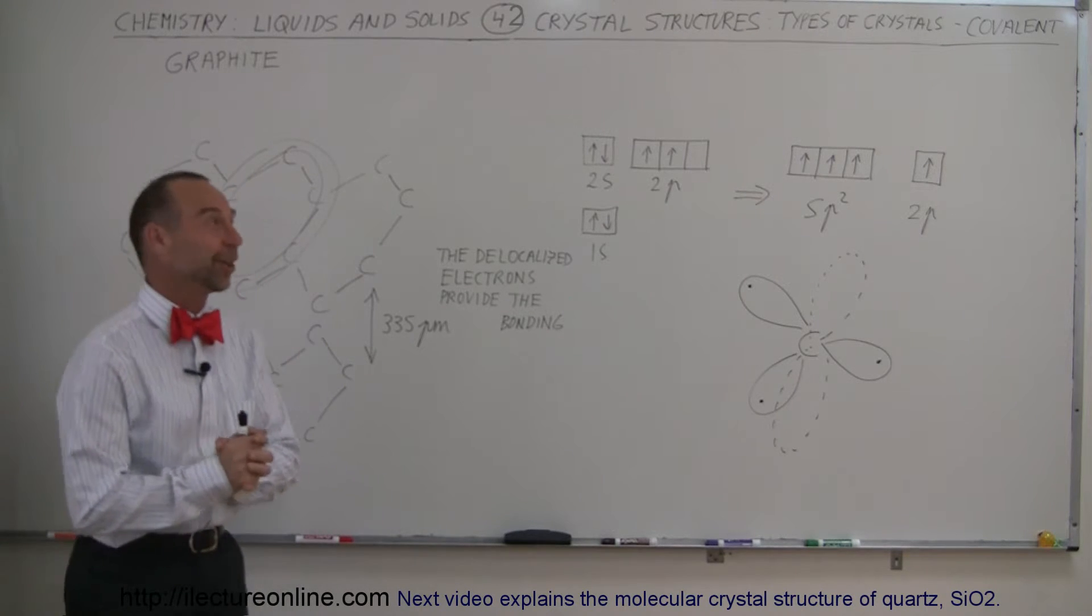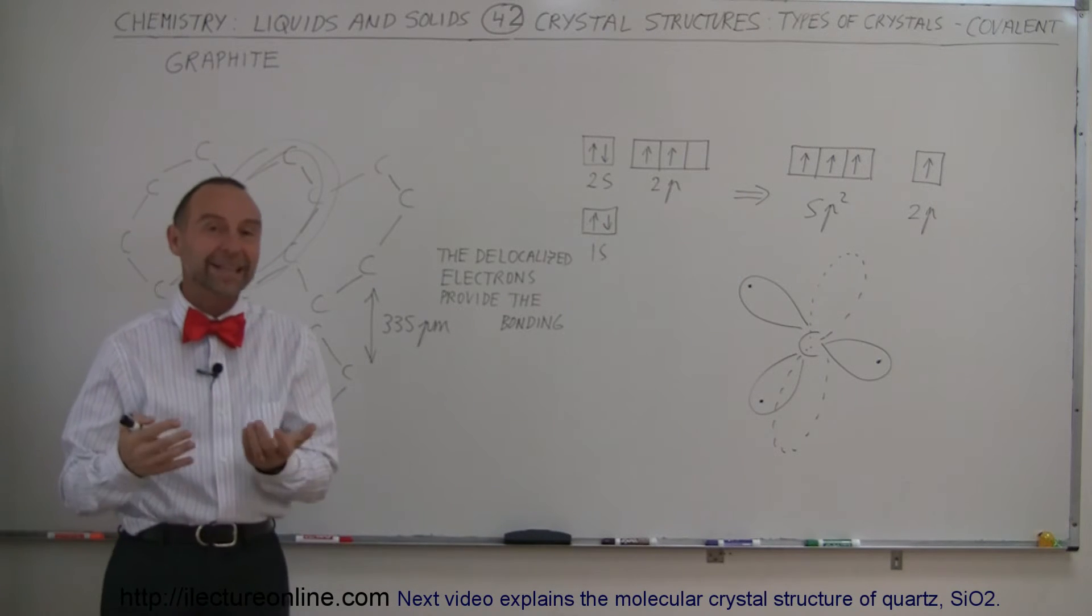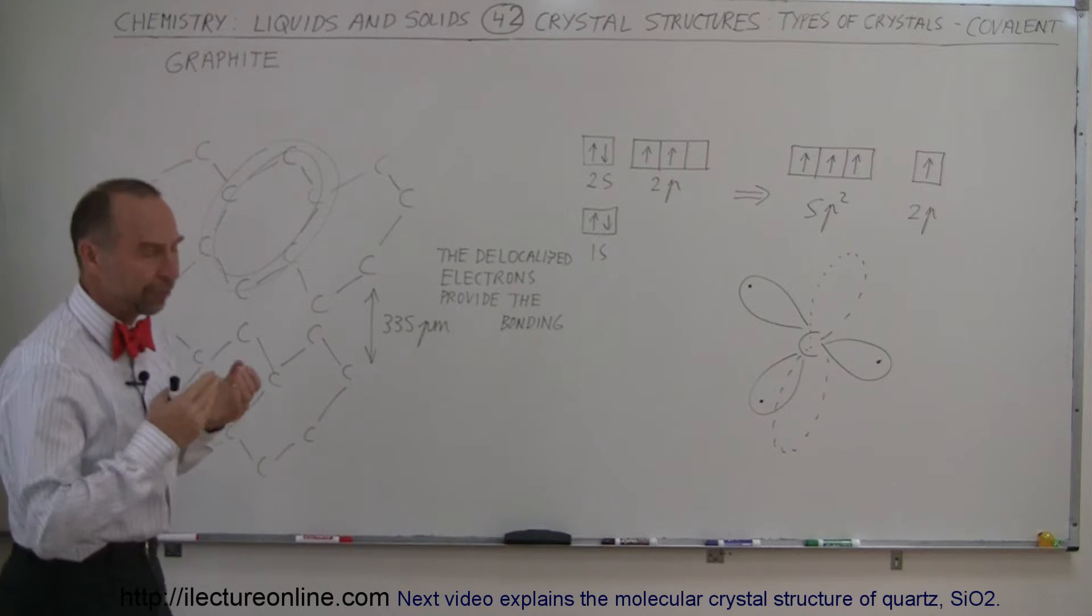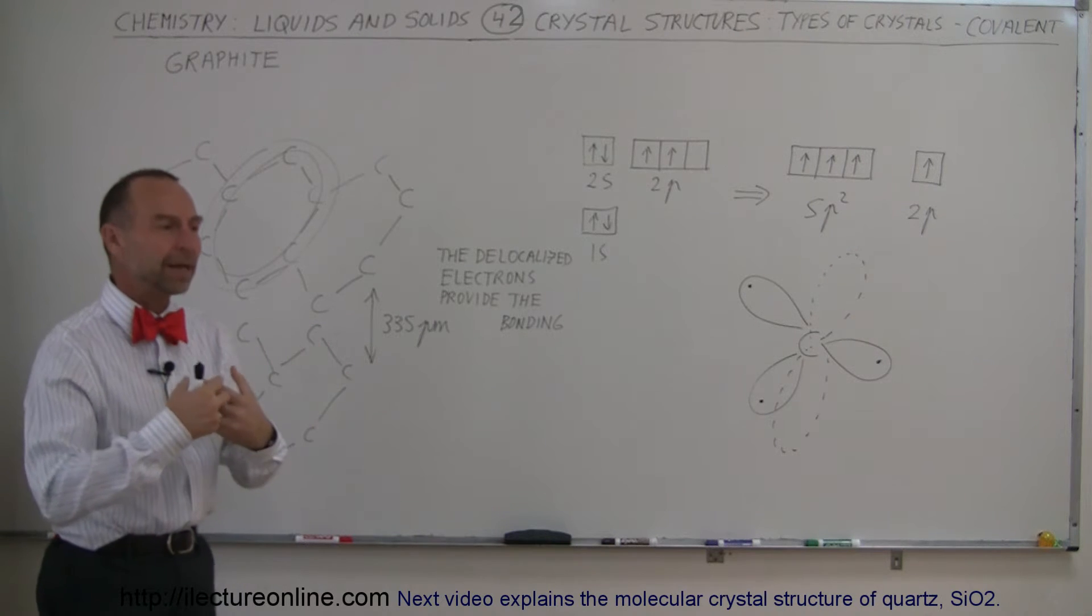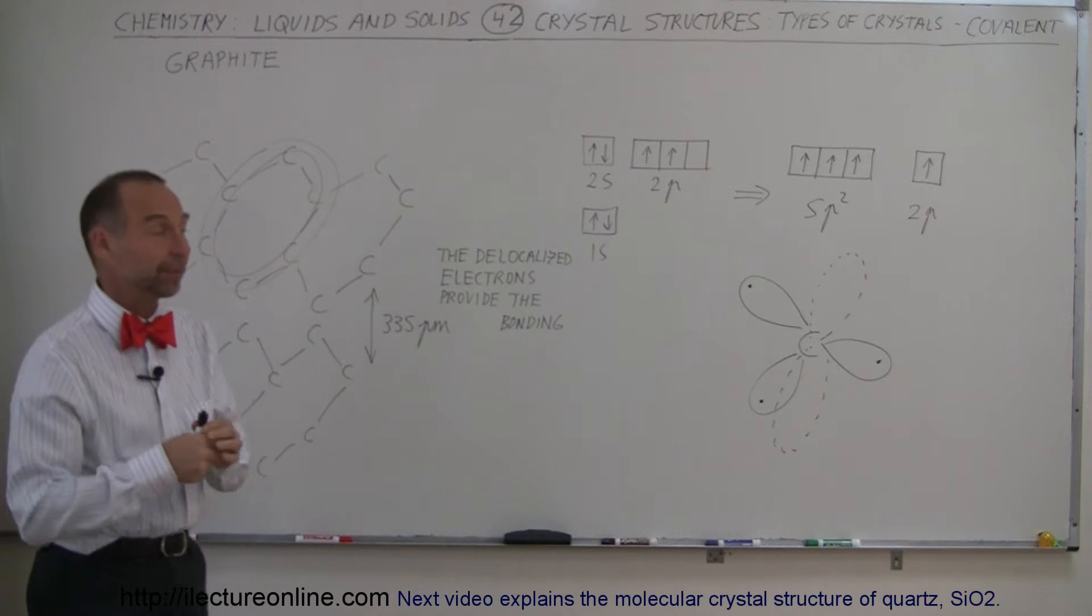Welcome to Electron Align and here's another example of what we call covalent crystalline structures. Covalent of course means that there's covalent bonding, covalent bonding means that they're sharing.